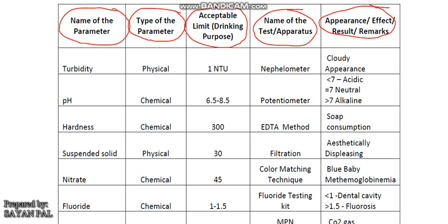First, turbidity. It is a physical water quality parameter and it is measured by nephelometer; the unit is nephelometric turbidity unit (NTU). The acceptable limit is 1 NTU and its cause-for-rejection limit is 10 NTU. Because of turbidity, water looks cloudy — that is, cloudy appearance.